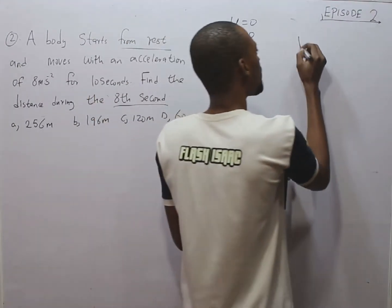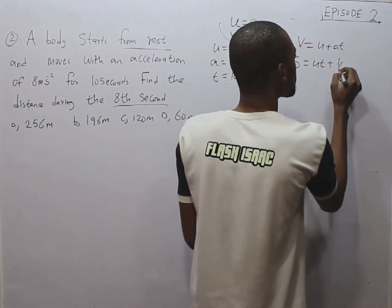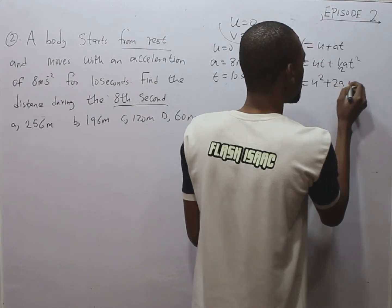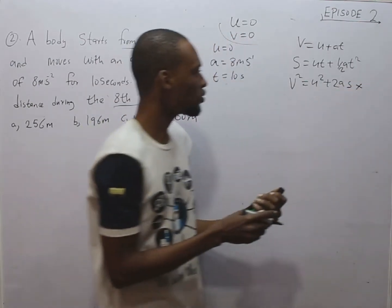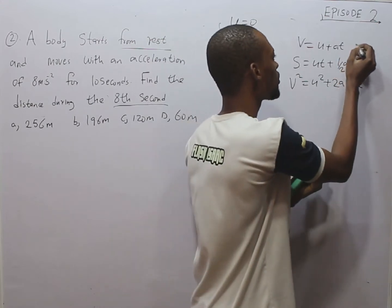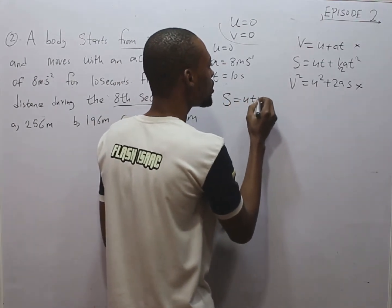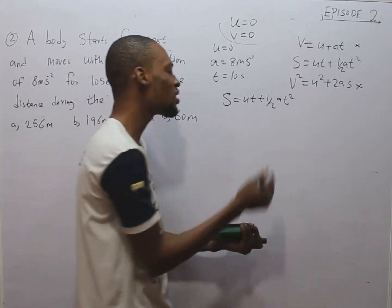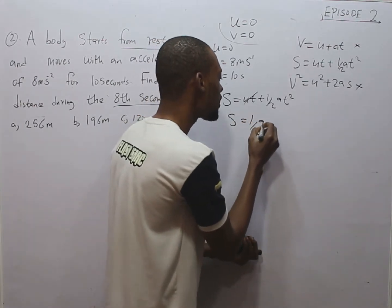From the equations of motion, we have V equals U plus AT; we have S equals UT plus one-half AT squared; and we have V squared equals U squared plus 2AS. We don't have distance given and we don't have final velocity, so we can't use those. To find the distance during the 8th second, we will use S equals UT plus one-half AT squared. Since U equals 0, U times T is 0, so the equation simplifies to S equals one-half AT squared.